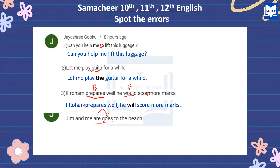But that is not the only error. Look carefully — 'me' is used in the subject position. Jim is the subject, and 'me' is used with 'and.' When 'me' appears in the subject place, it should be 'I.' So 'Jim and me' is wrong — it should be 'Jim and I.' Similarly, 'Roshni and me' in a subject position would also be incorrect; 'I' is the correct subject word.